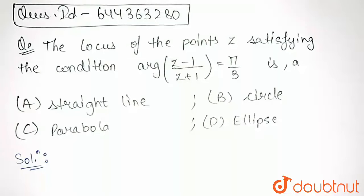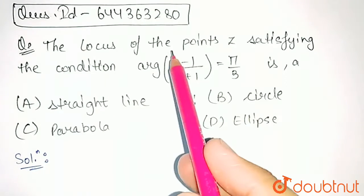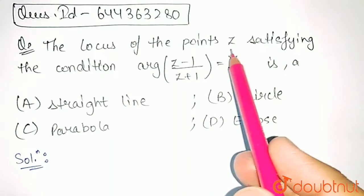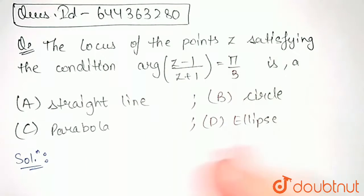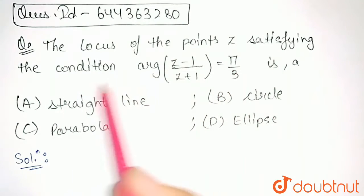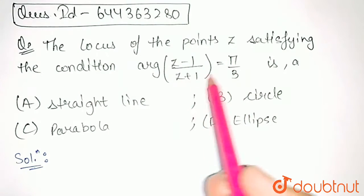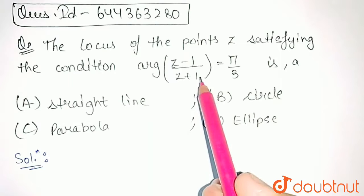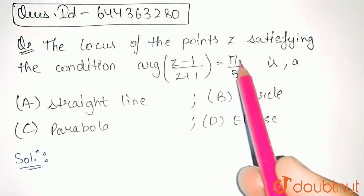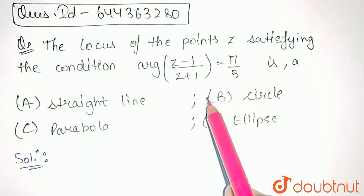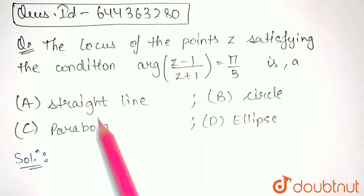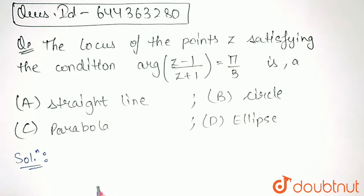In this question, we have to find the locus of all the points z satisfying the condition: argument of (z minus 1) divided by (z plus 1) is equal to pi by 3, and we need to identify which of the following options is correct.